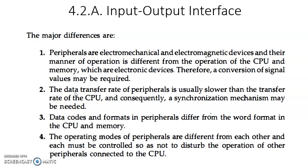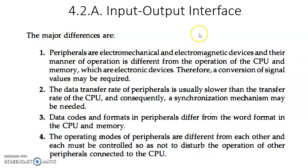Peripheral devices are very slow and the CPU is very much faster than them. So some kind of synchronization is required — a synchronization mechanism is needed for the data transfer between peripheral devices and CPU. The third reason is the data codes and formats used in peripheral devices differ from the word formats of the CPU and memory. The last reason is that operating modes of peripheral devices are different from each other, and we need an interface to ensure that one peripheral device will not disturb the other. Because of these major differences, there is a need for an interface.